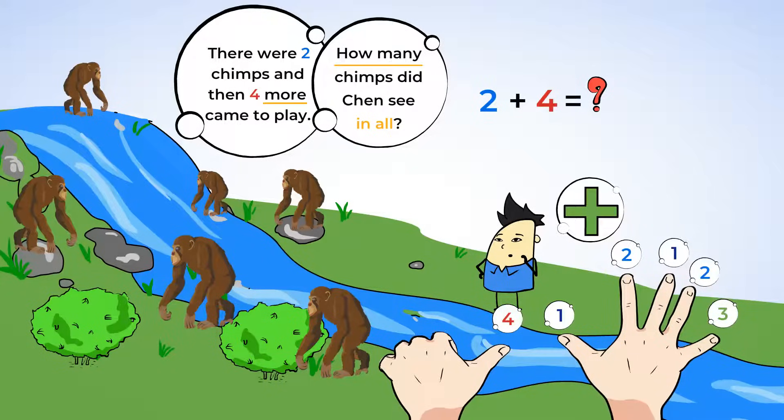Now, how many fingers do we have up in all? Well, this hand has five and one more is six. So, six equals two plus four. We can write that down here. So, that means Chen saw six chimps in all. How fun.